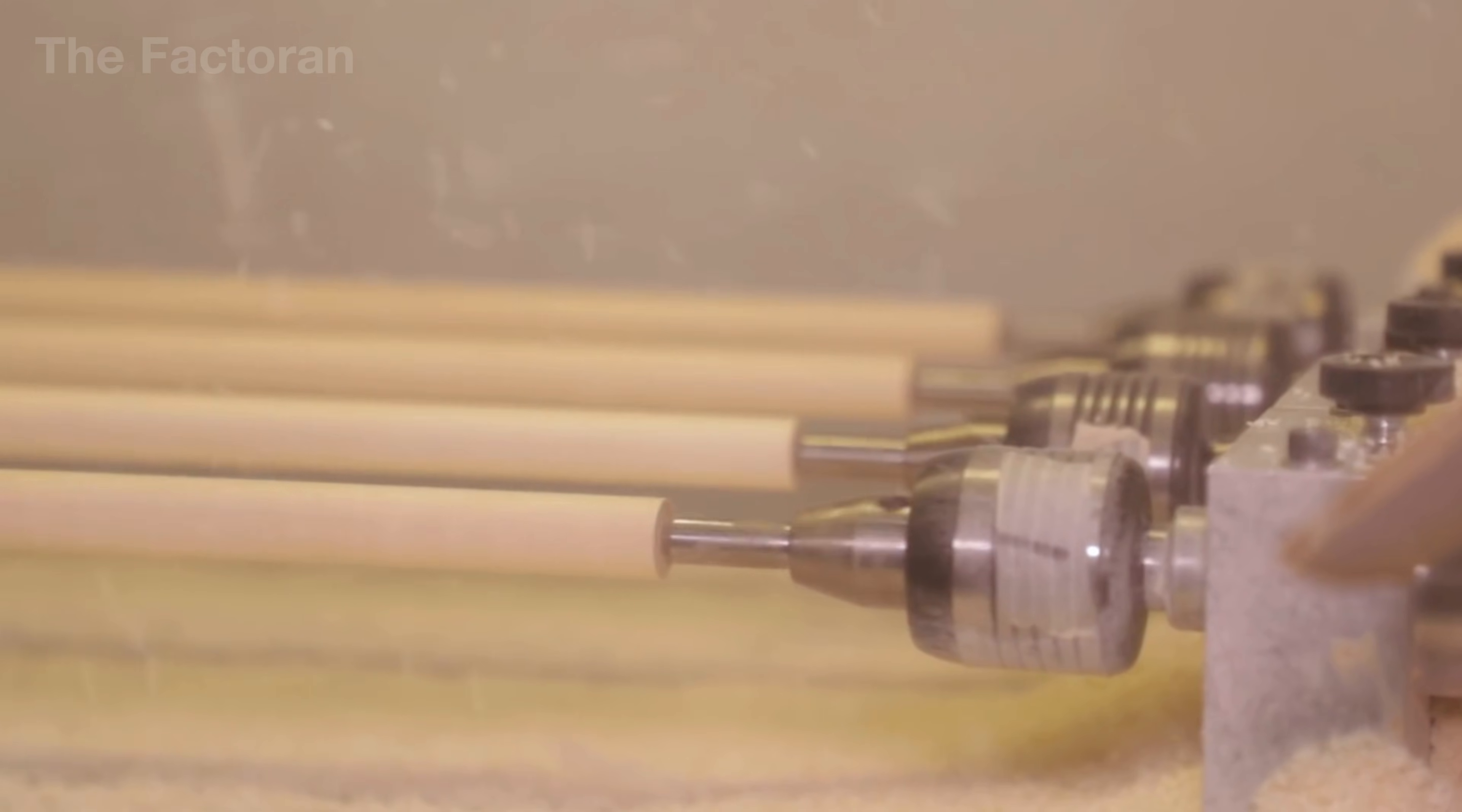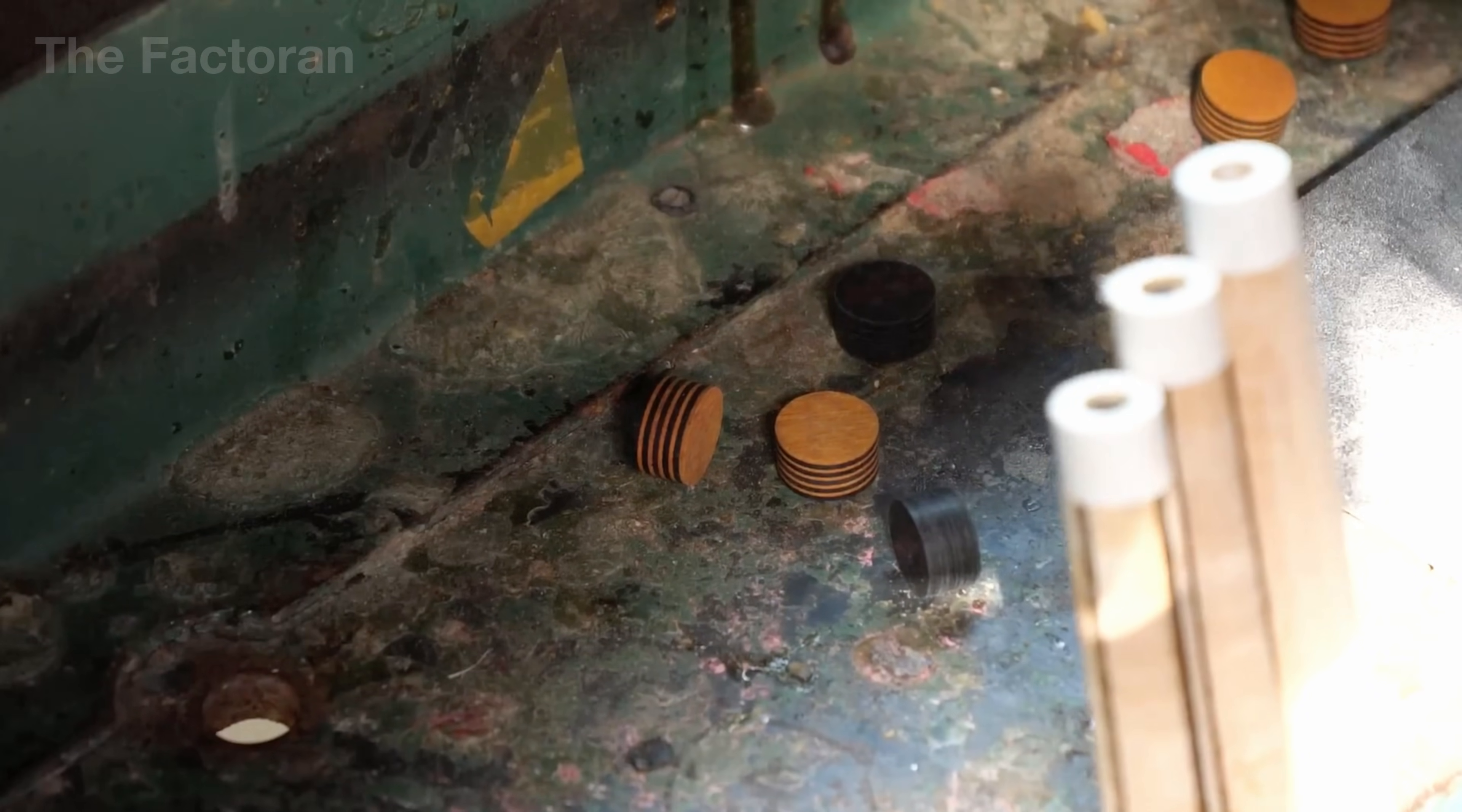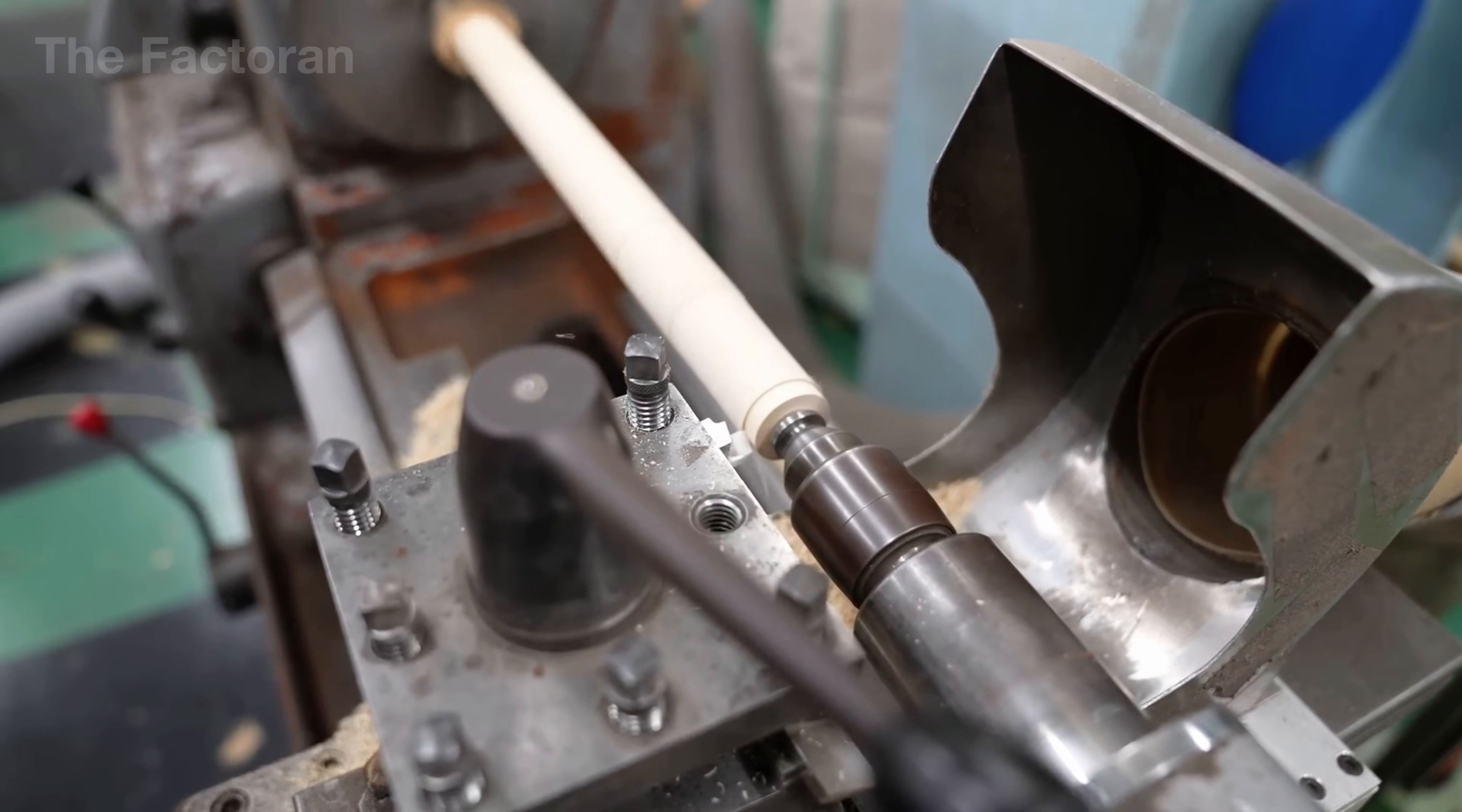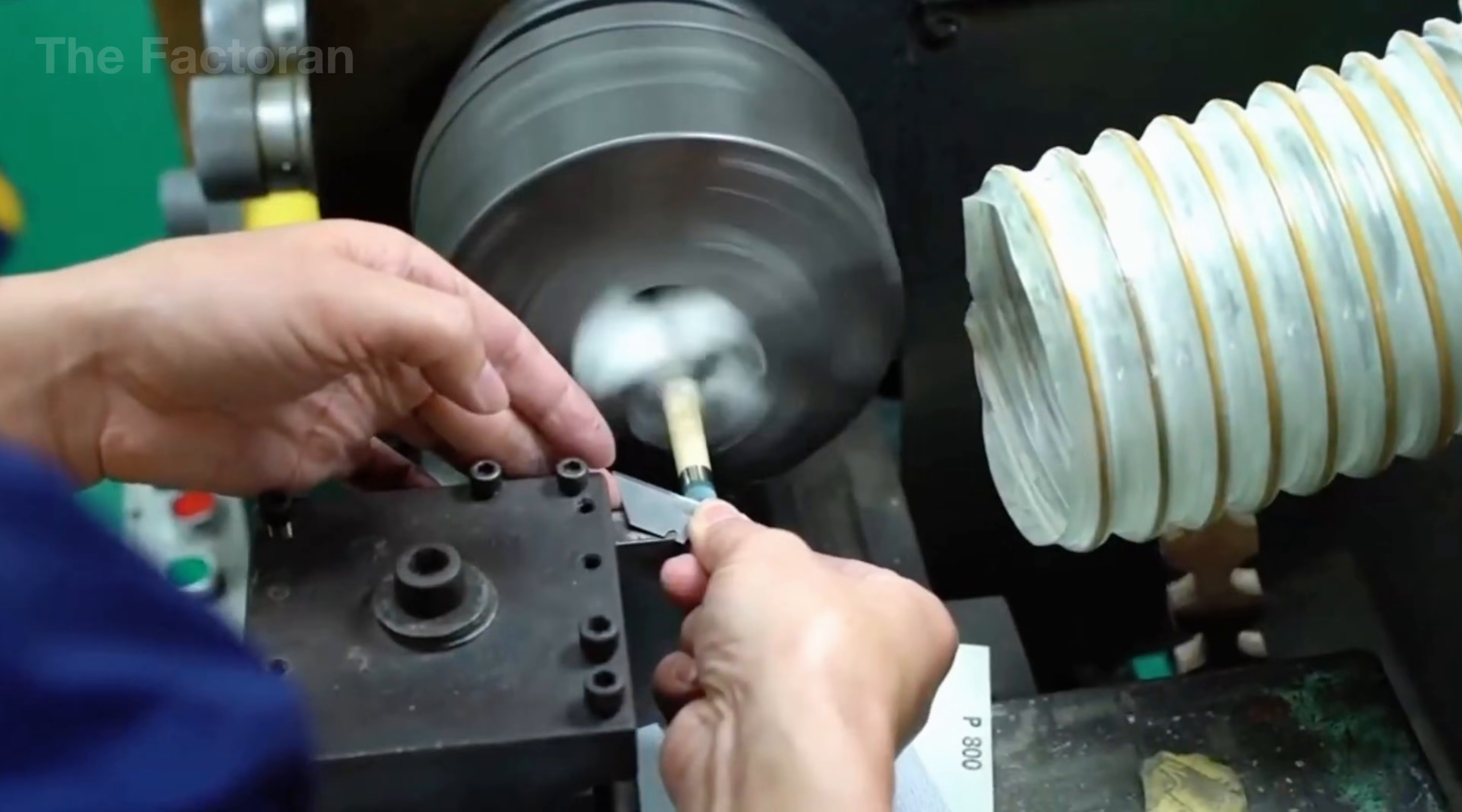After the shaft has been fully machined, the craftsman begins attaching the tip assembly. A specialized adhesive is evenly applied to the end of the shaft, then the ferrule is installed and aligned with precise accuracy. Next, a second layer of glue is applied to the contact surface, and the tip is pressed firmly into position. The tip itself is made from multiple layers of compressed leather, most commonly cowhide.